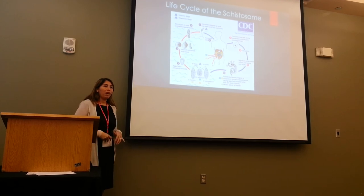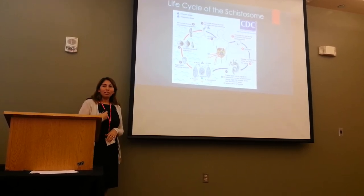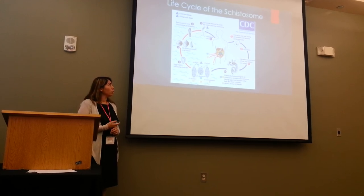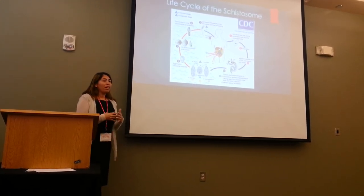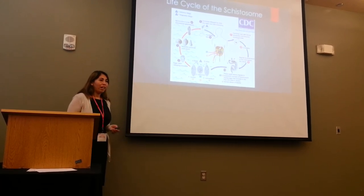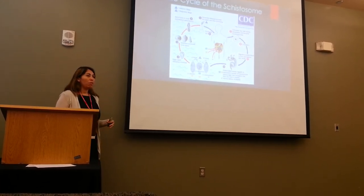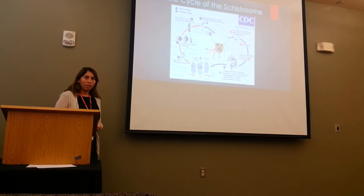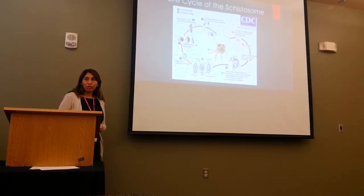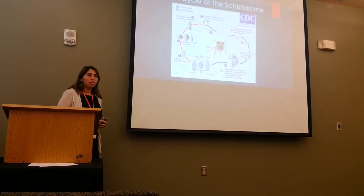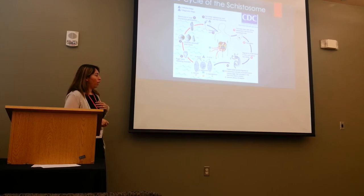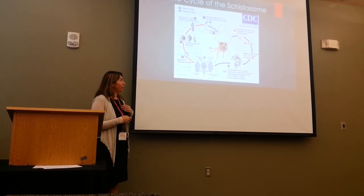Those cercaria then travel through the body, through the lungs, to the liver and the intestines, where they mature further into adult, sexually immature worms, and they mate and produce eggs. Those eggs can then migrate through the body again and can become lodged in the tissues, causing granulomas, which are the body's response to foreign objects in the tissues and actually causes inflammation. Or they can be passed via the urine and feces again into the fresh water source and continue with the cycle.